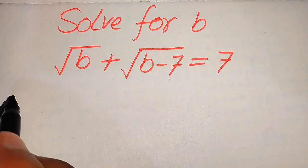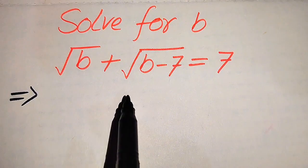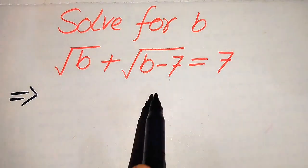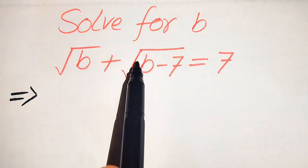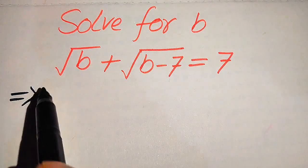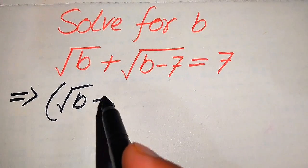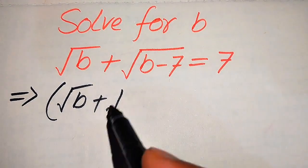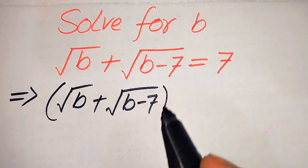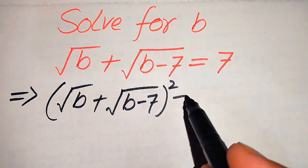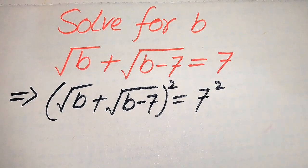The very first thing we are going to do is take squaring on both sides in order to eliminate the square root on both of these terms. So when you square both sides it will be written as: square root of b plus square root of b minus 7, whole square, equals 7 square.